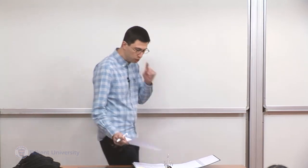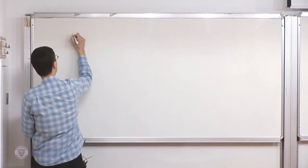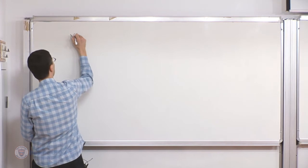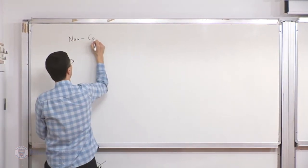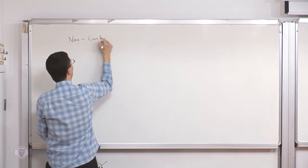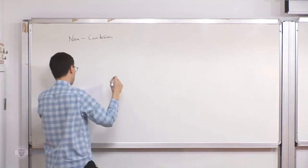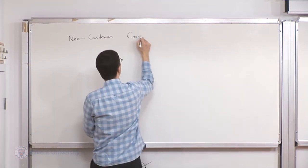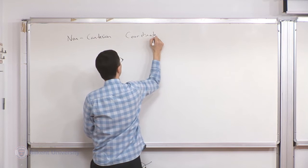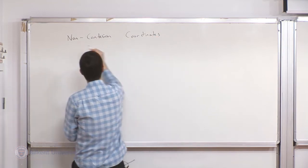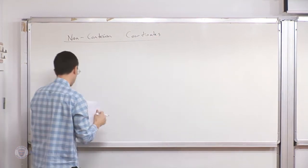I'd like to finish up the mathematical review part today. Essentially last time we talked about some differential operations like gradient and curl on the Cartesian coordinate system. So let's make a note of how things roughly look in non-Cartesian coordinates — there are two popular choices.